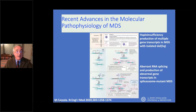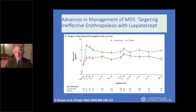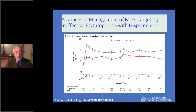Among the therapeutic advances, a major role is played by the introduction of luspatercept, a compound that can target ineffective erythropoiesis. A recent study published in the New England Journal of Medicine has shown that luspatercept is particularly effective in MDS with ring sideroblasts and is able to abolish transfusion requirement in about 40% of these patients.